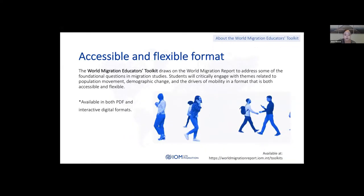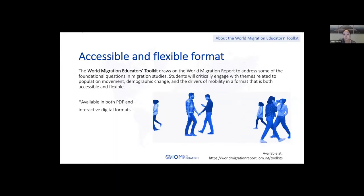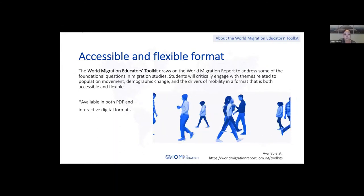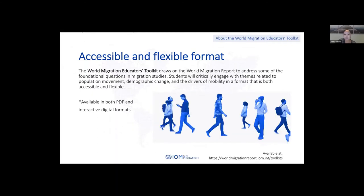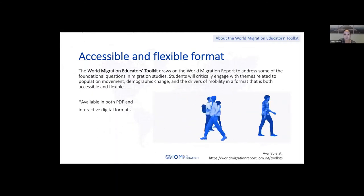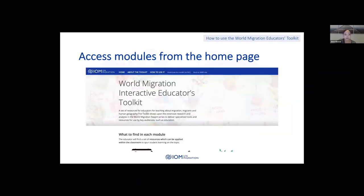We have strived to make the toolkit as accessible and flexible as possible to meet diverse learning needs. Throughout the digital toolkit we've embedded videos of interest designed for those working digitally. We do however have a PDF version available as we know that internet access may not be available in all teaching circumstances. The PDF version provides all the tools a teacher will need to conduct these activities. This next section will describe some of the ways in which we can use the digital interactive version of the toolkit.